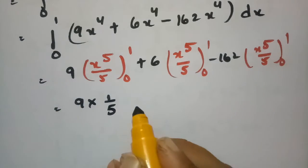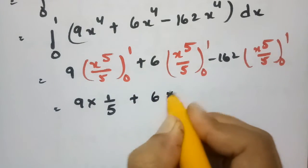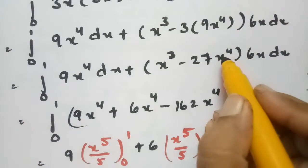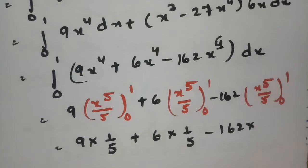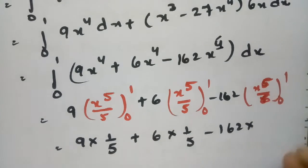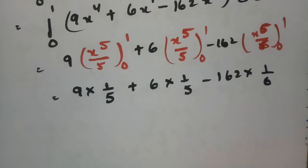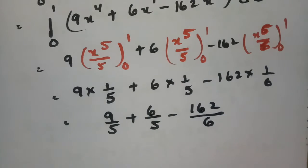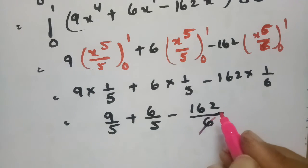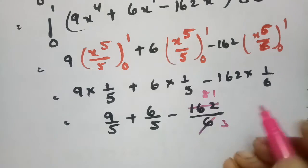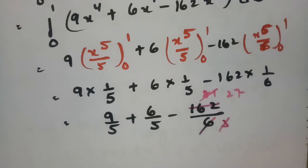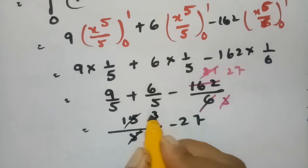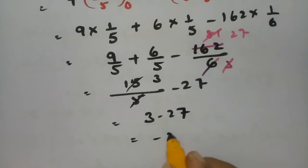Substituting x = 1: 9 times 1/5, plus 6 times 1/5, minus 162 times 1/6. There was a correction — for x⁴ times x the integration is x⁶/6, giving 1/6. So this is 9/5 plus 6/5 minus 162/6. After cancellation: 15/5 minus 27, which is 3 minus 27, giving minus 24.